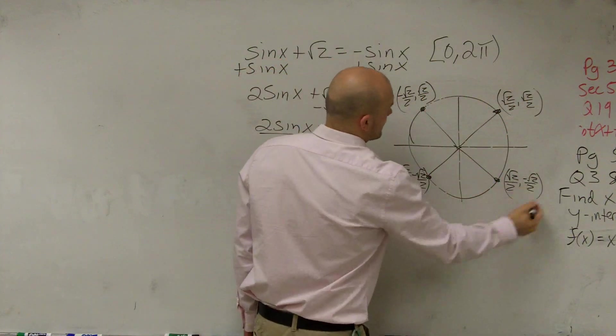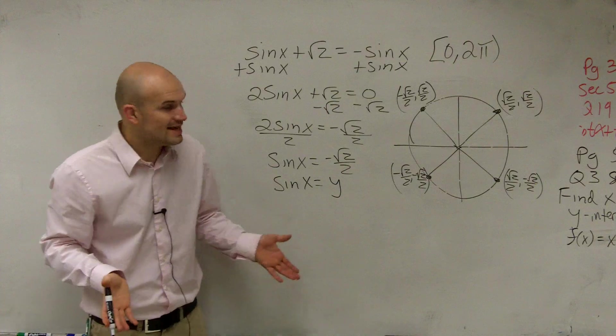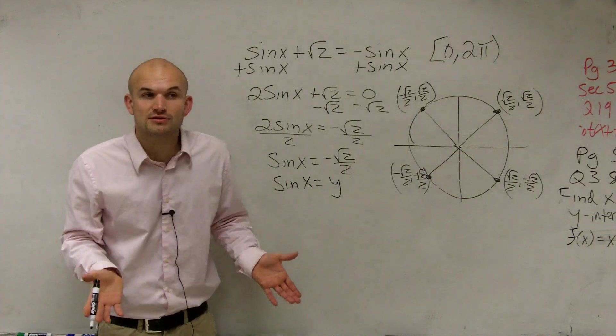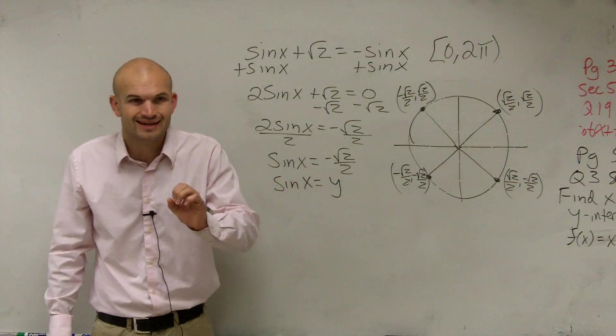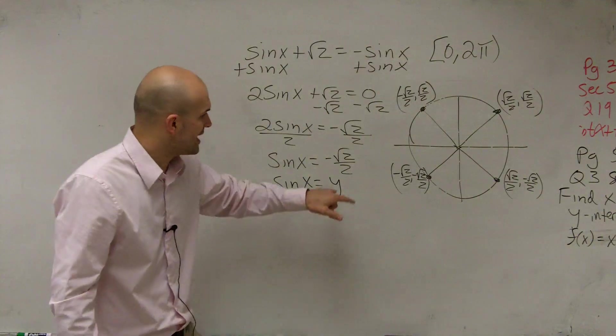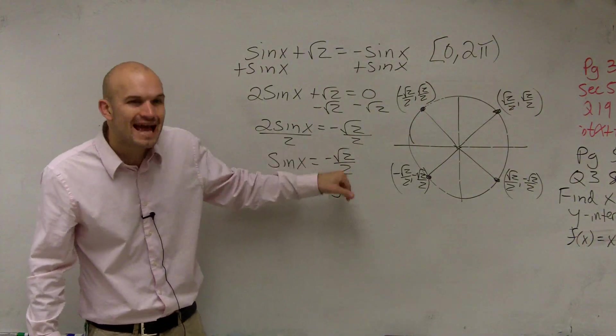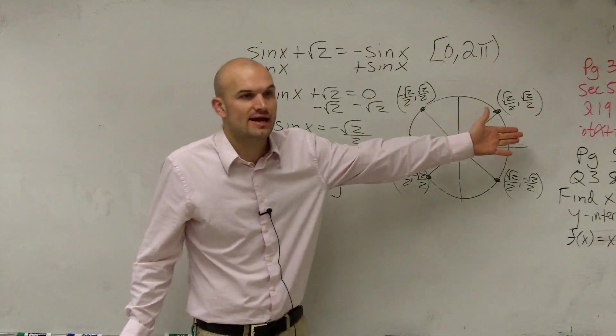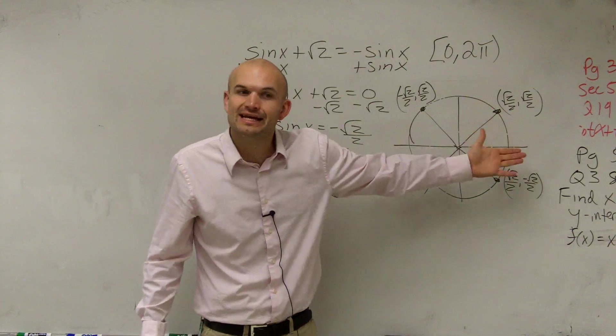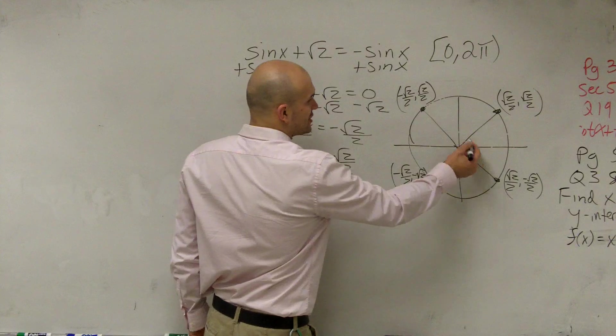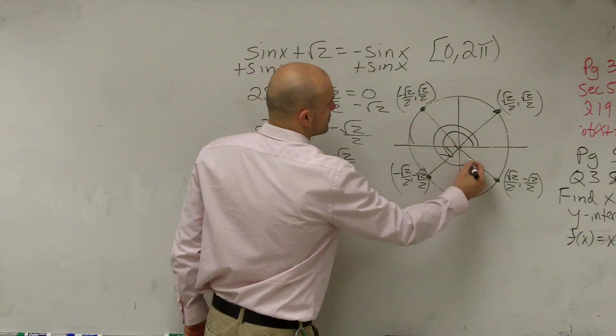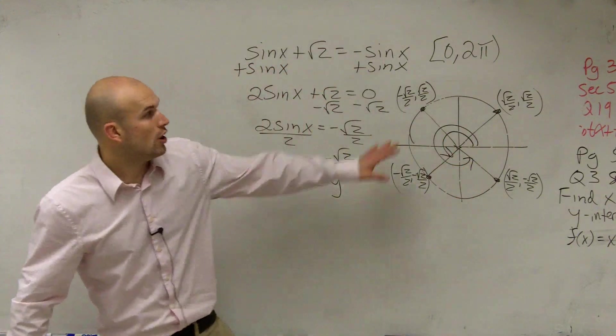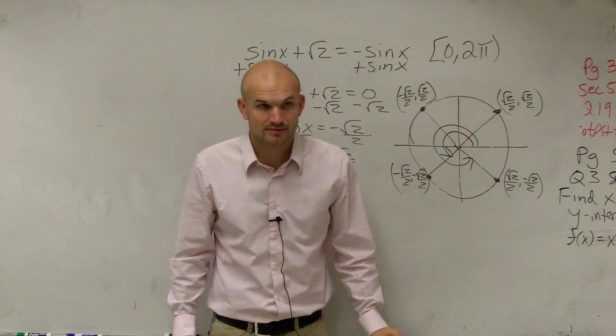OK. Now, here we're not taking the square root or anything. We don't have a plus or minus. So all I'm concerned about is the only angles when I have my y is equal to a negative square root of 2 over 2. So I need to look at these points and say, all right, when is the y-coordinate negative square root of 2 over 2? Well, that's going to occur at two angles on this interval of 0 and 2 pi. Does everybody see that?